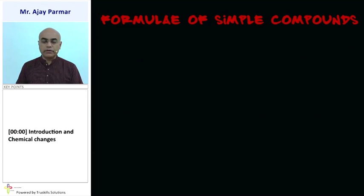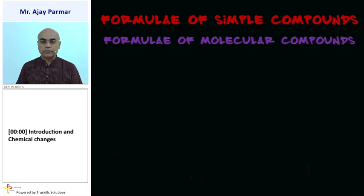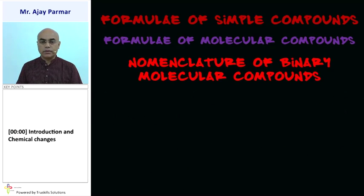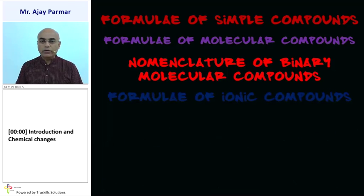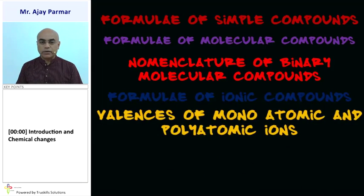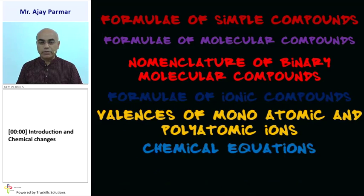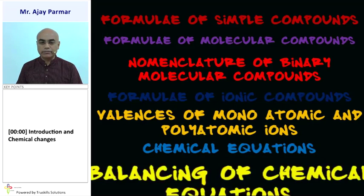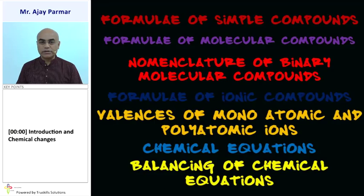In this chapter we are going to study about formula of simple compounds, how to make formula of molecular compounds, nomenclature of binary molecular compounds — that means how do we name them — how do we form the formula of ionic compounds, valences of monoatomic and polyatomic ions, chemical equations, how do we represent them, and balancing of chemical equations.